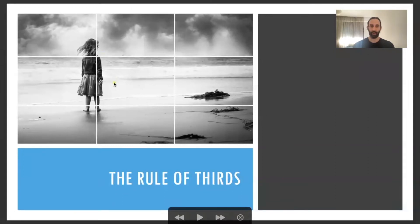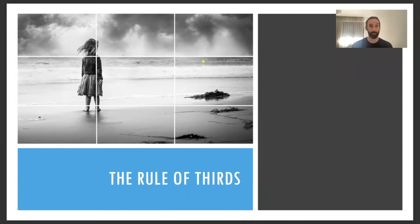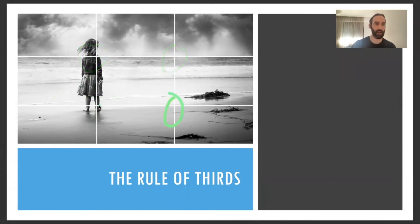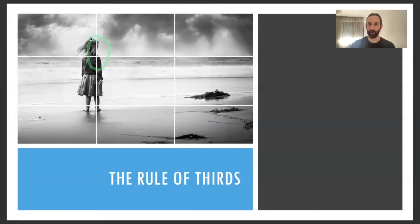The rule of thirds is a really good technique to use when thinking about composition and focal point. We use these imaginary lines, dividing the photo into thirds horizontally and vertically, and you think about the focal point being at these cross sections. It really draws the eye into the composition and makes for a really effective photo.